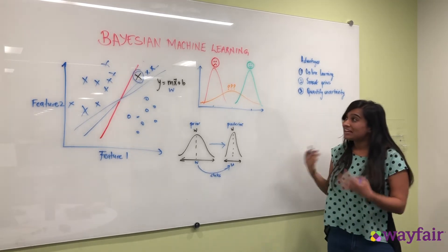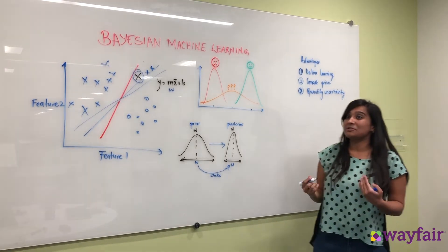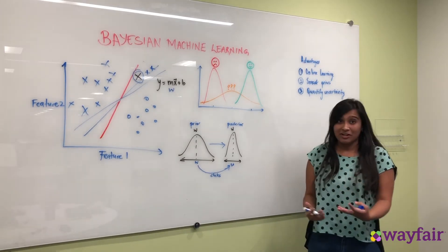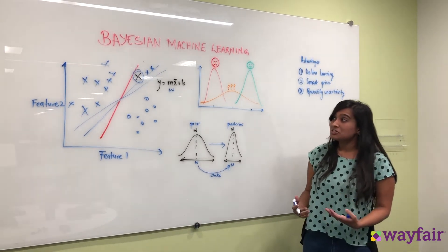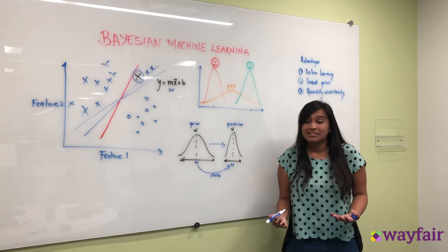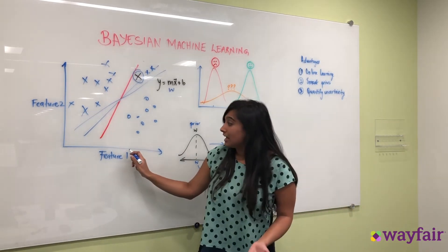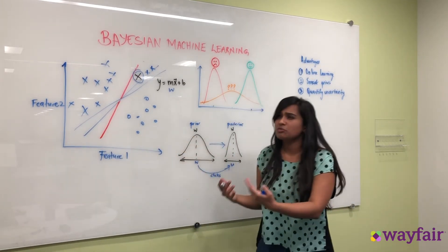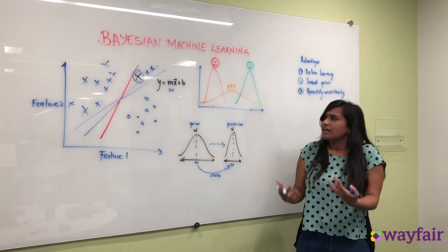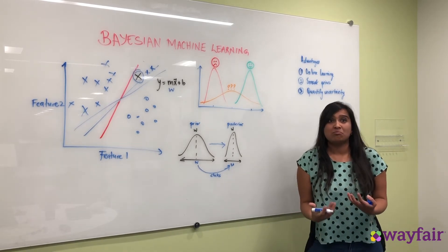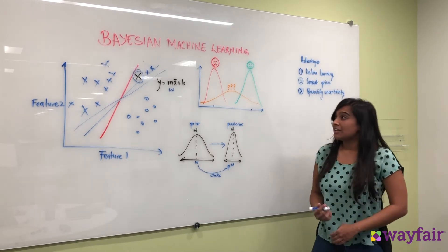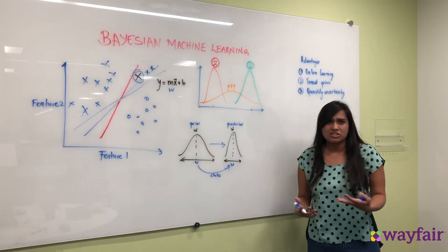Another cool thing about Bayesian machine learning is that you can incorporate smart priors. So at Wayfair in particular we use Bayesian machine learning to rank our products. We have products that are represented by certain features and we know that feature one can have certain properties that make it more desirable to people.